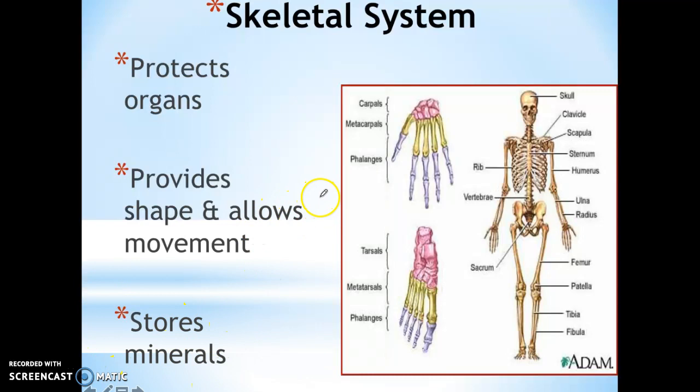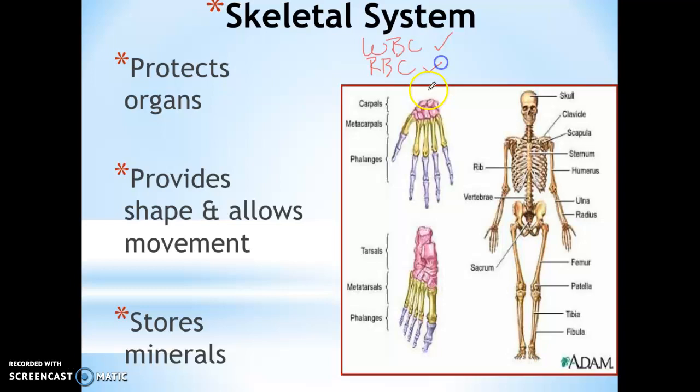White blood cells and also red blood cells, which carry oxygen, are actually made in the bone marrow of bones, and then they are sent out to the circulatory system. This is one interaction that the skeletal system has with the immune system for white blood cells, and then with the circulatory system for red blood cells. That is why the skeletal system is so important.